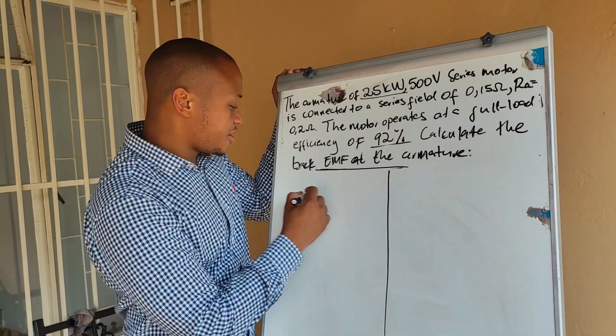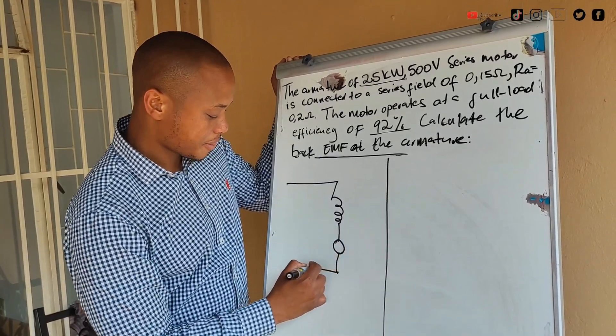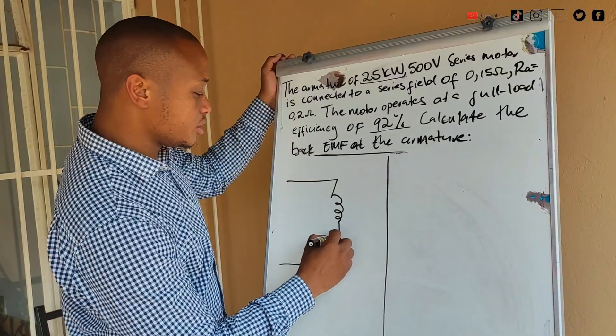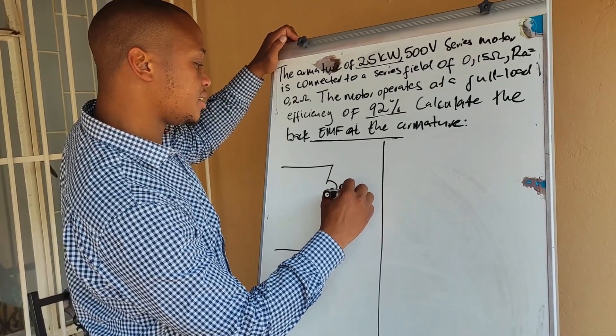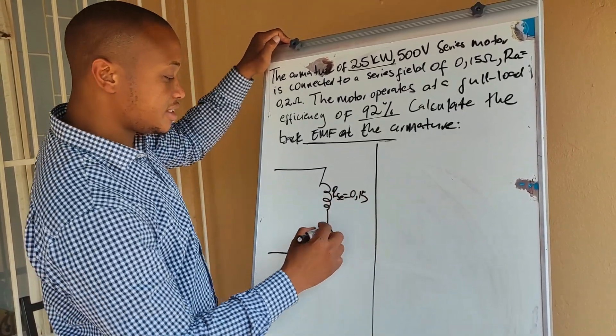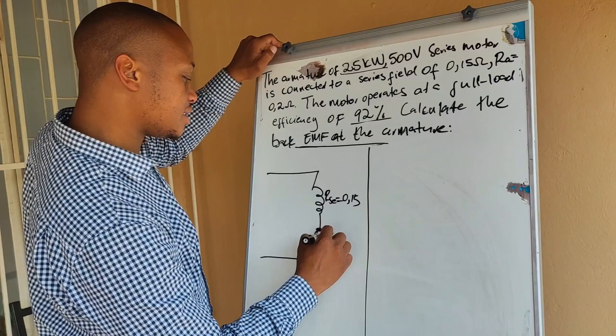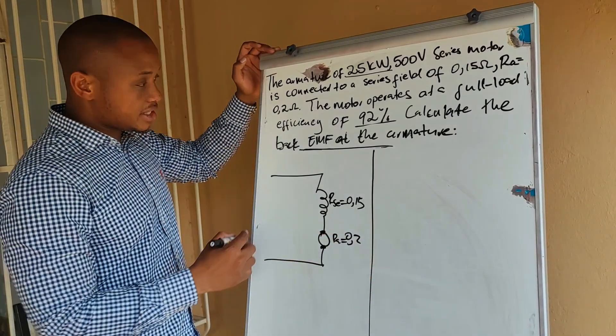So we have a series connected machine in this manner where we are told that the series field RSE is equal to 0.15 and the armature resistance RA is equal to 0.2.